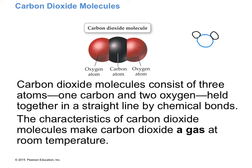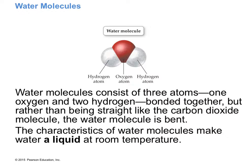Carbon dioxide forms a linear shape — the atoms form a line. Water, on the other hand, has one oxygen and two hydrogens, and it's not in a line. Water is called a bent conformation, which we'll talk about later in the semester. So molecules can have different shapes.